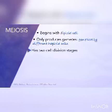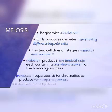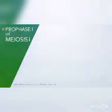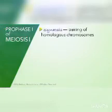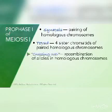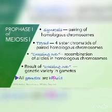Some key points to note about meiosis: Meiosis begins with a diploid cell and produces genetically different haploid gametes. Meiosis has two division stages — meiosis one and meiosis two. Meiosis one produces two haploid cells, each containing one chromosome from the homologous pairs. Meiosis two separates sister chromatids to produce four haploid gametes. A tetrad consists of four sister chromatids of paired homologous chromosomes. Crossing over is the recombination of alleles in homologous chromosomes, resulting in genetic variety in gametes. All gametes are haploid.